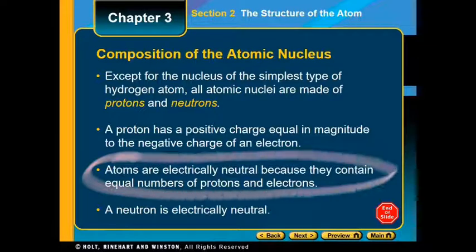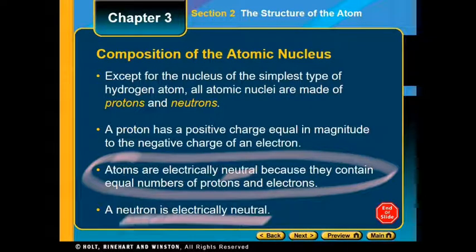You've got some extra notes to add here. Atoms are going to be electrically neutral because the charge of your protons and electrons will cancel each other out. And on top of that, the neutron itself is electrically neutral.